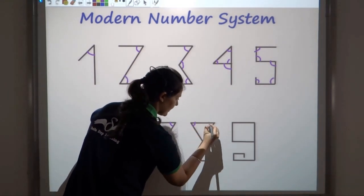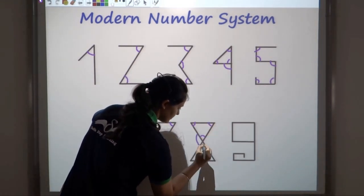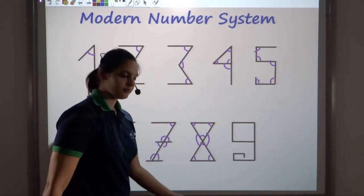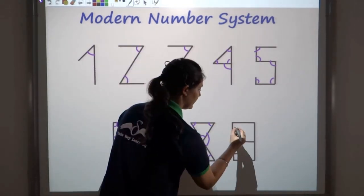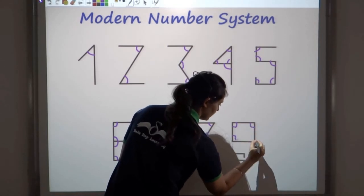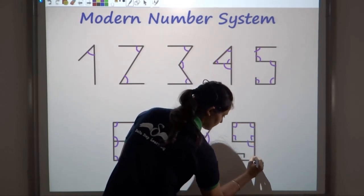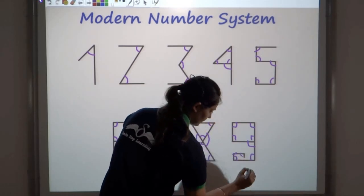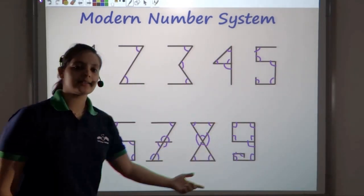For eight, I have eight angles, and for nine, I should get nine angles. One, two, three, four, five, six, seven, eight, and nine. So I get nine angles in case of nine.